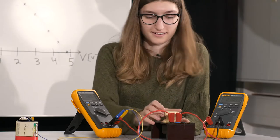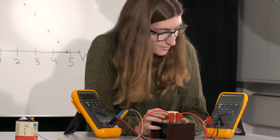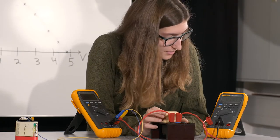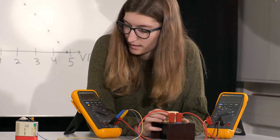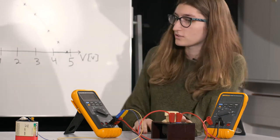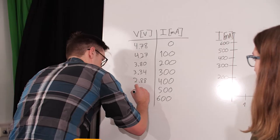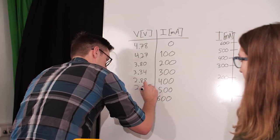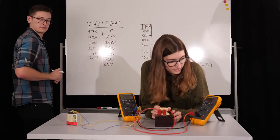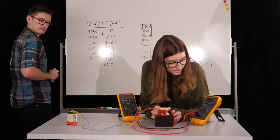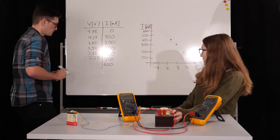Okay, alright. So for 500, the reading is 2.25. And then for 600, it's 1.78.